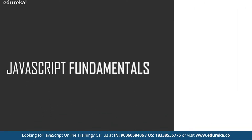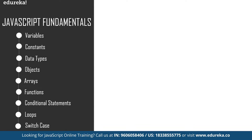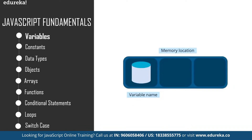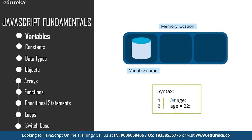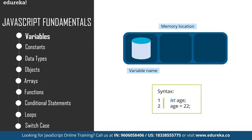Let's move ahead and cover some of the basic fundamentals of JavaScript. These include variables, constants, data types, objects, arrays, functions, conditional statements, loops, and switch case. A variable is basically a name given to a memory location which acts as a container for storing data temporarily — reserved memory locations to store values. To declare a variable in JavaScript, we use the let keyword. Here in Visual Studio Code I have typed the syntax for variable declaration — you use the let keyword, declare a variable like 'h', and then provide the particular value for that variable.